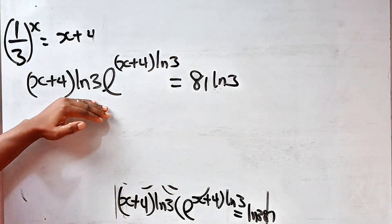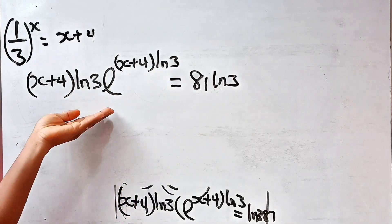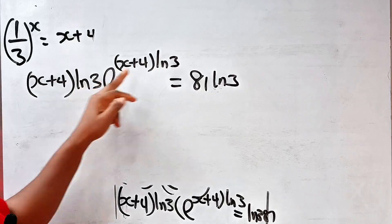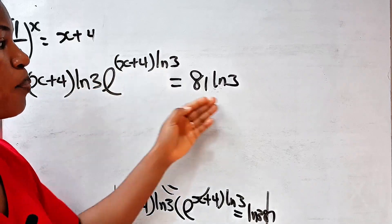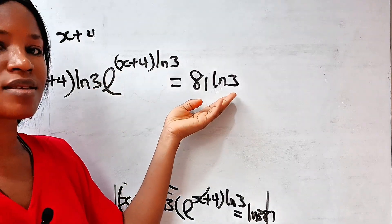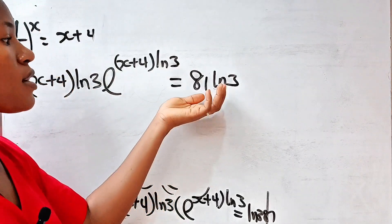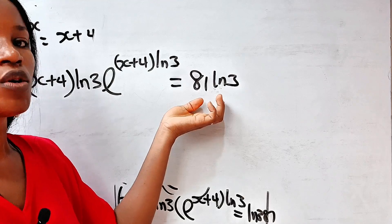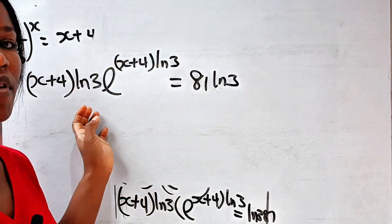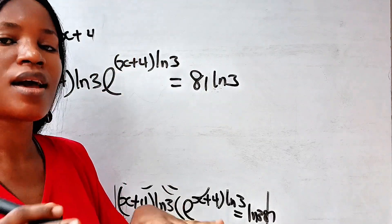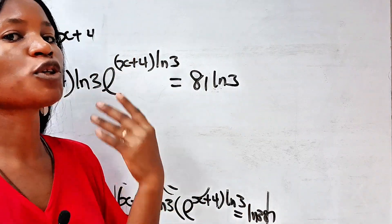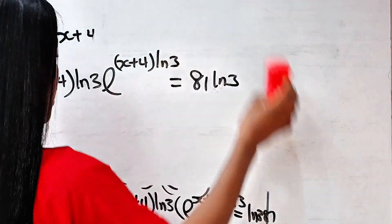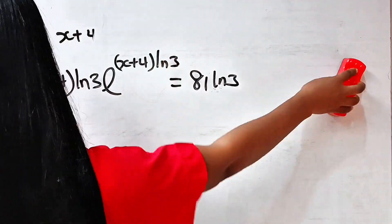When you look at the left-hand side, notice it is now in the form we want — the coefficient and the power are the same. But the right-hand side is not yet in that form. So let's manipulate the right-hand side to match, and then we apply the Lambert W function to get the final result.